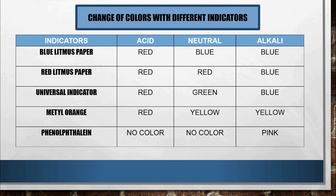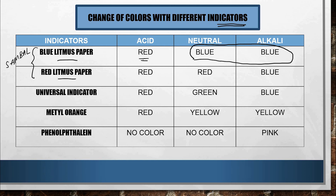To determine whether something is acidic, neutral, or alkaline, we use indicators. Blue litmus paper — memorized using the 'sambal' method — turns red for acid and remains blue for neutral and alkaline. Red litmus paper remains red for acid and neutral, but turns blue for alkaline. Universal indicator, used in the laboratory, shows red for acid, green for neutral, and blue for alkali.